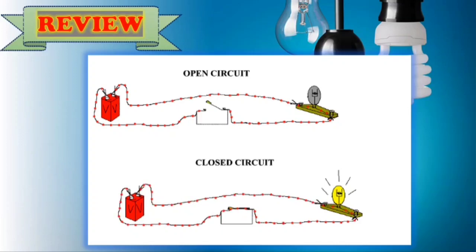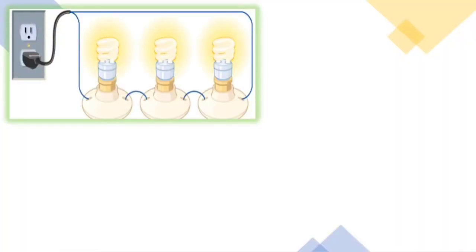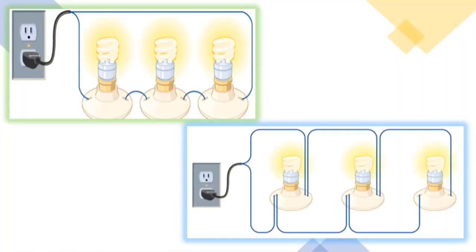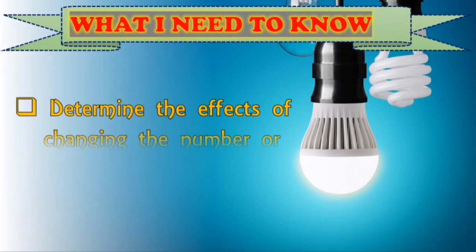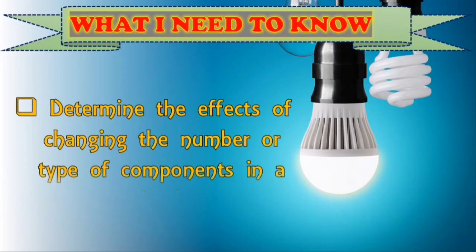Therefore, it allows electricity to flow through it. This time, you will be learning two kinds of connection in our circuit. So at the end of this lesson, you will be able to determine the effects of changing the number or type of components in a circuit.